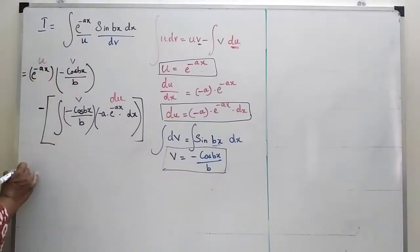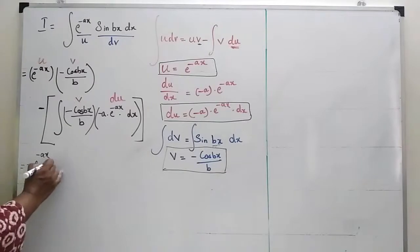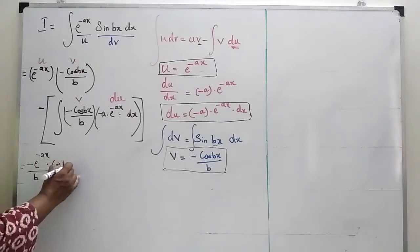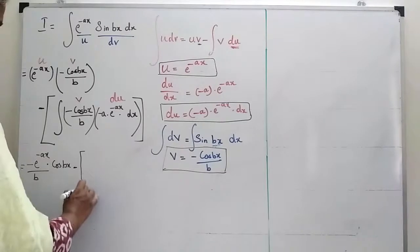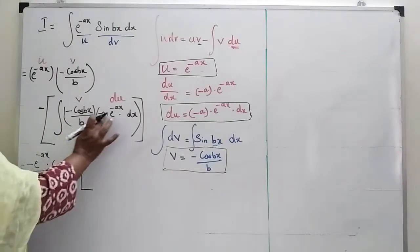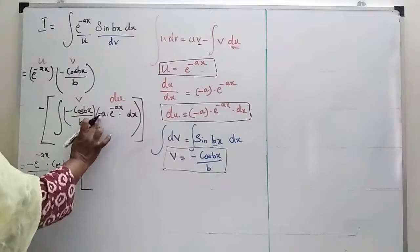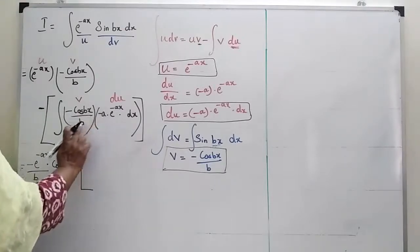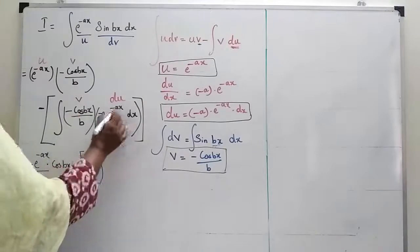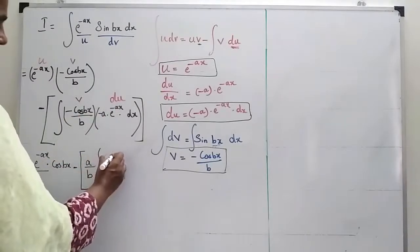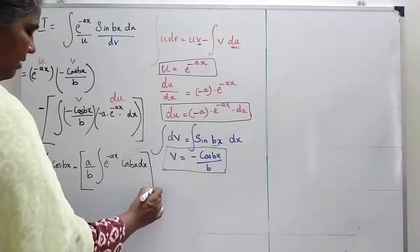Simplifying this, I get minus e power minus ax by b into cos bx. Then taking out the constant terms — minus into minus gives plus — so I have plus a by b, integral of e power minus ax into cos bx dx.